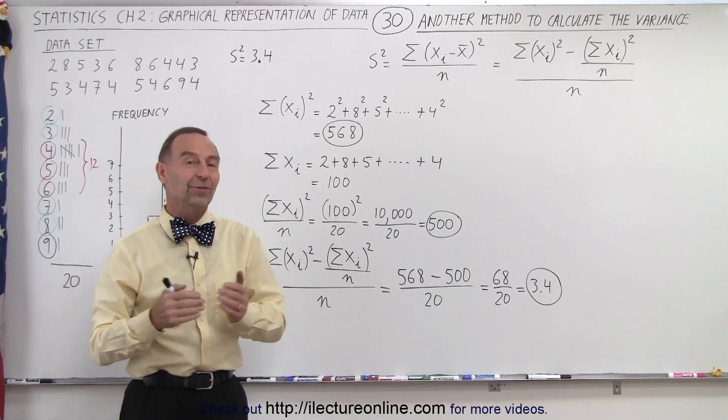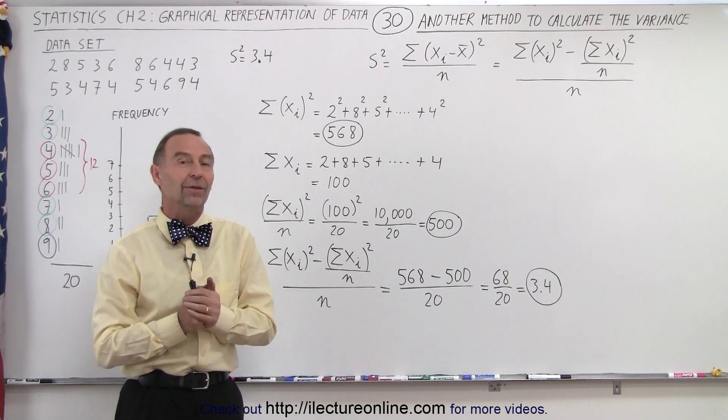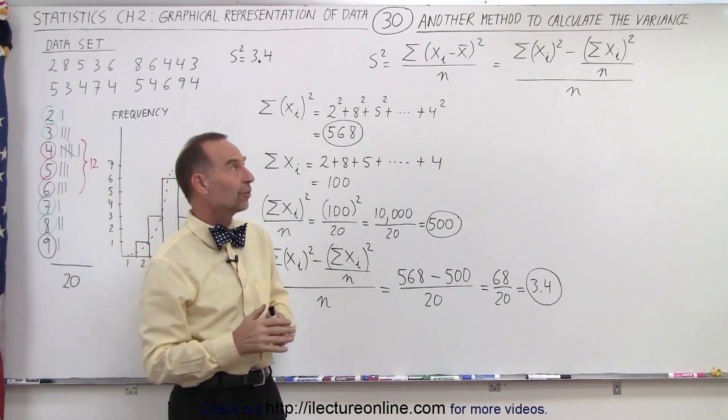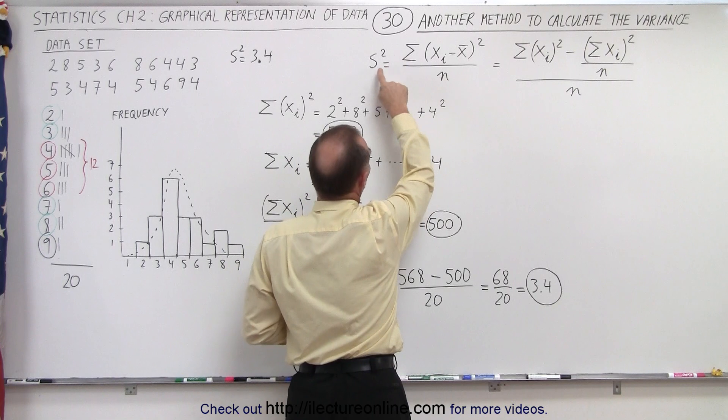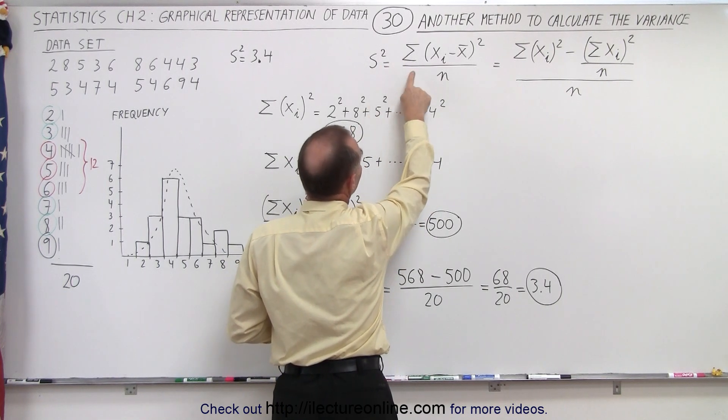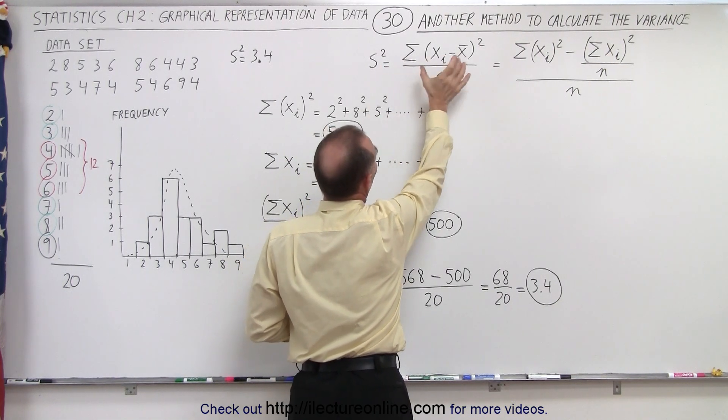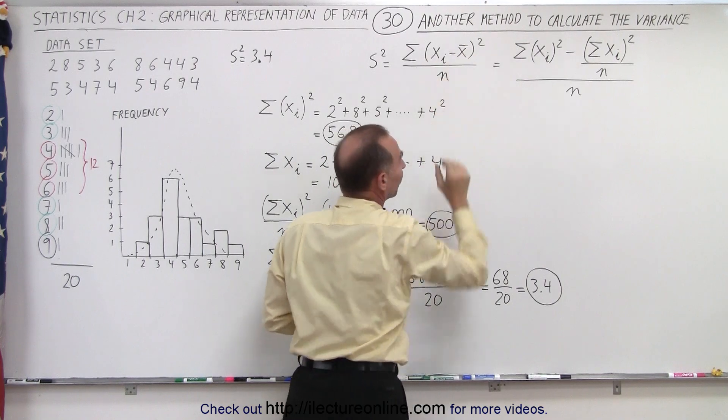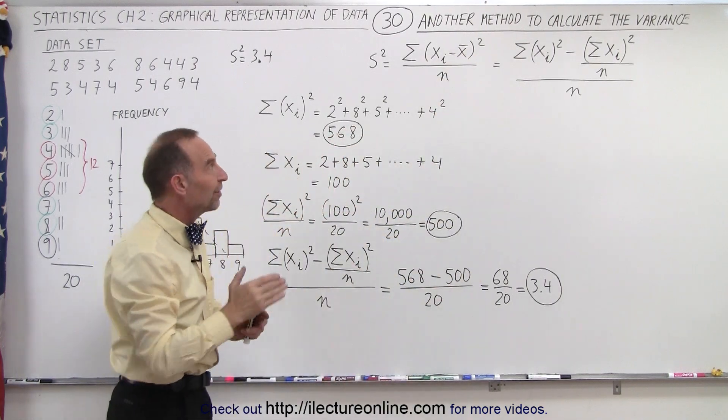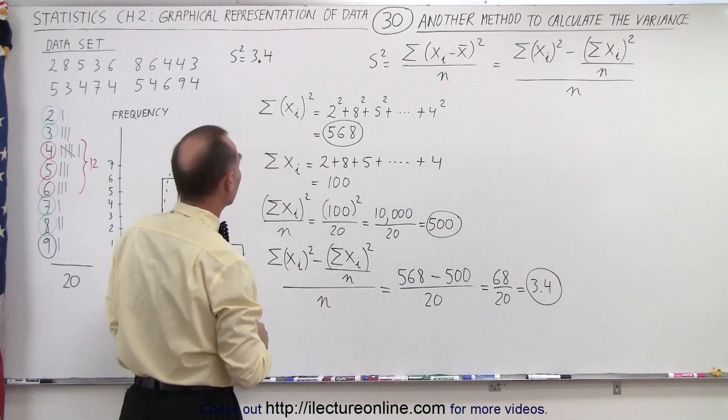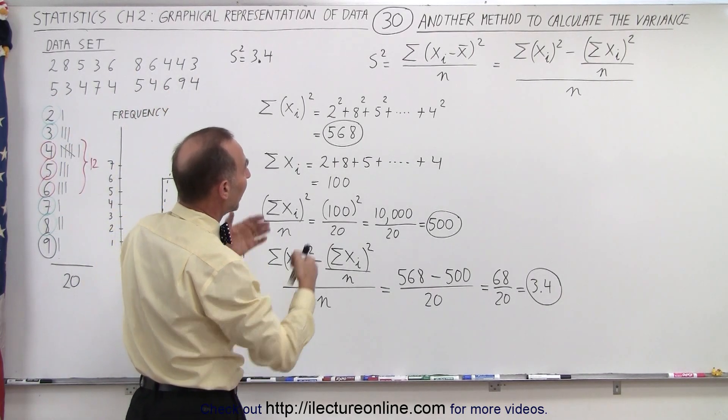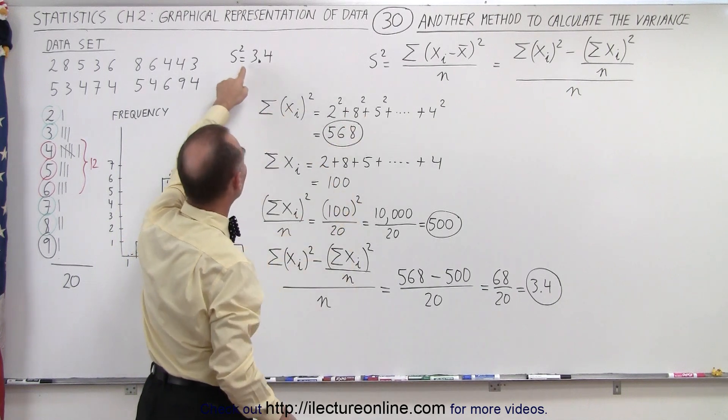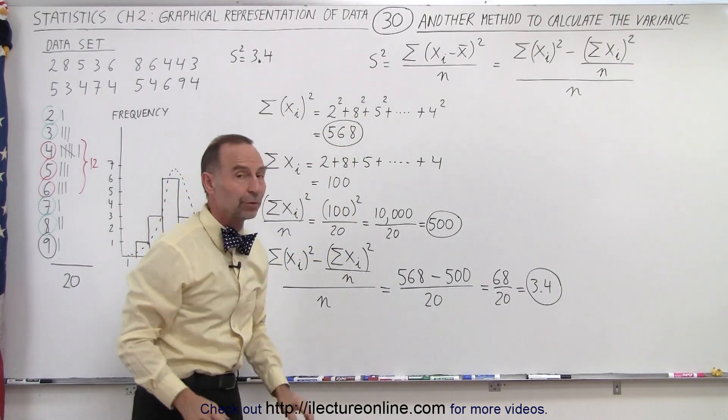Welcome to our lecture online. It turns out there's a second method by which we can find the variance. By now we should be familiar with this equation where the variance, S squared, can be calculated by taking the sum of the square of the differences between each of the data points and the average value. Here are the 20 data points of the data set we used in the previous video, and by using that method we found that the variance was equal to 3.4.